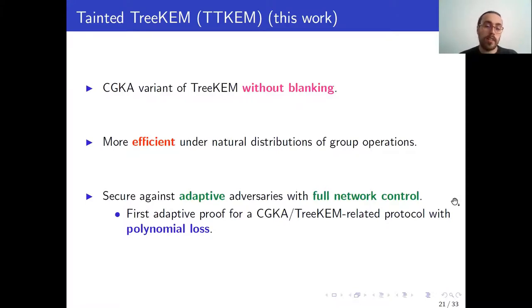As a potential solution to this, we propose our protocol called Tainted TreeKEM, which is a CGKA variant of TreeKEM that does not make use of blanking. In this work, we show that this is more efficient under some natural distributions of group operations. And furthermore, we prove it secure against adaptive adversaries that have full network control. In particular, our proof is the first adaptive proof for any CGKA or TreeKEM-related protocol that achieves polynomial loss.